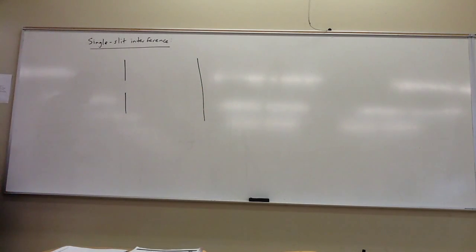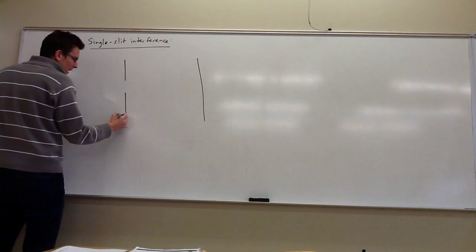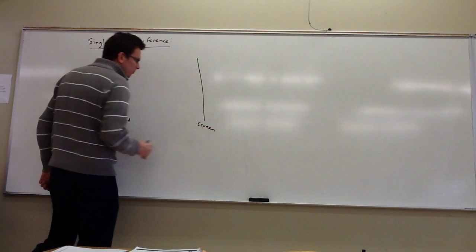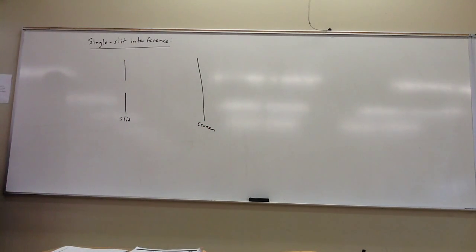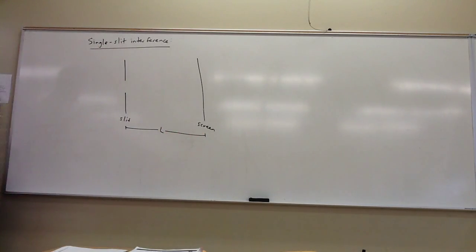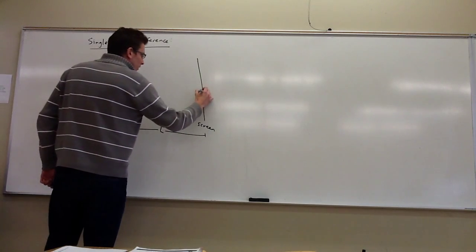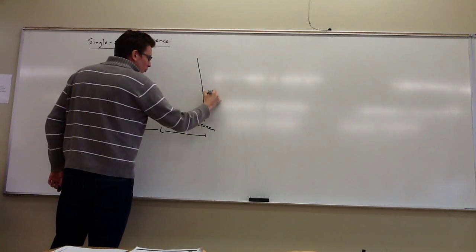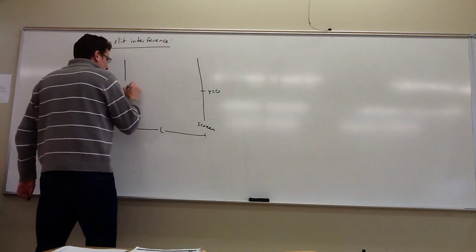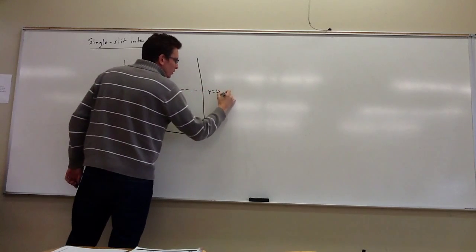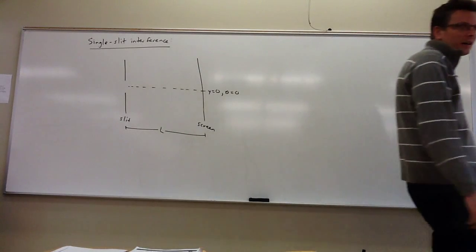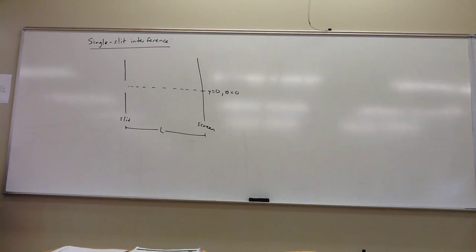So everything else being the same — here we have where our slit is located, and here we have some kind of observation screen. I'm going to call the distance from the slit to the screen capital L. I'm going to call the center of the screen y equals 0 for measuring distance along the screen; it's also theta equals 0. So if I want to talk about what I see on the screen, I can talk about it in terms of physical distance y, or in terms of angle.